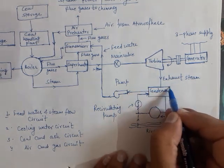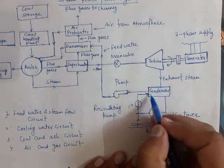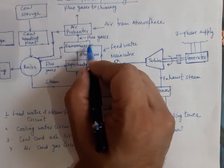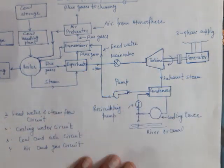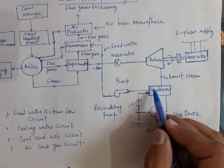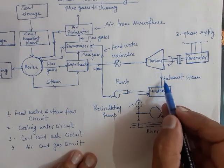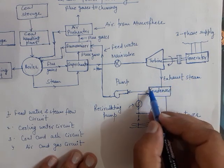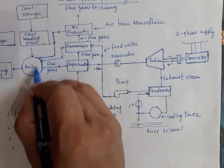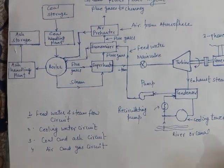When steam has been expended in the turbine, the exhaust steam is sent to a condenser, where it is condensed and converted back into liquid water. This water is then pumped back to the boiler and the cycle continues. The exhaust steam is condensed using water from a river or canal.